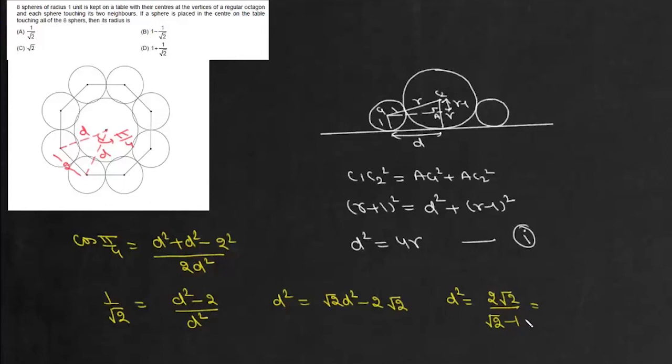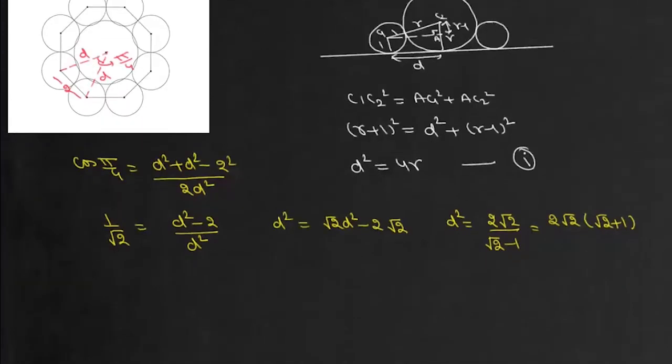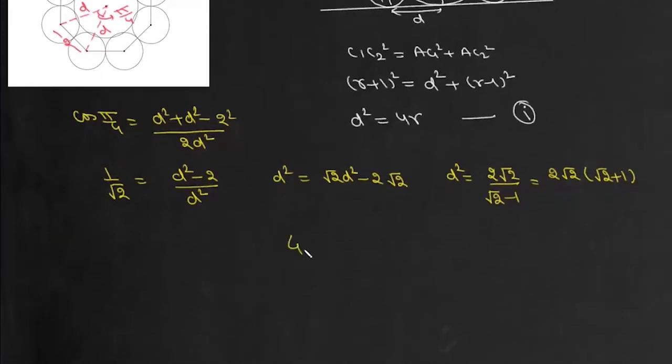Now if we rationalize this, it becomes 2√2(√2 + 1). Since D² = 4R, we can equate: 4R = 2√2(√2 + 1).